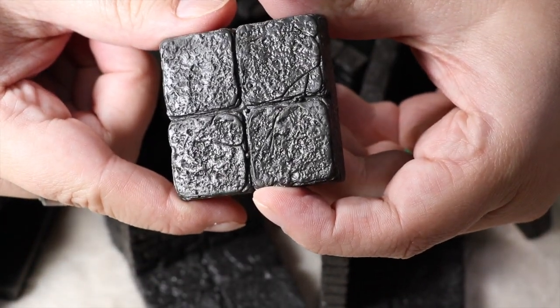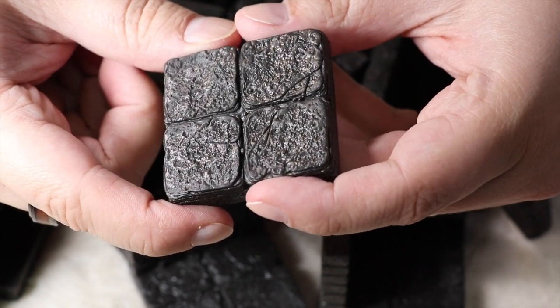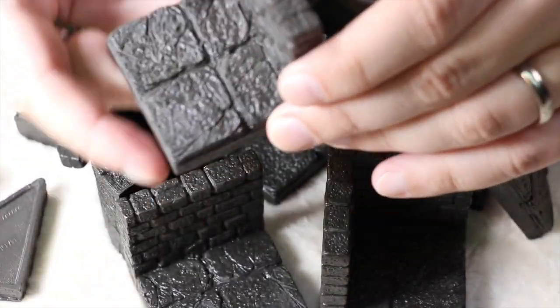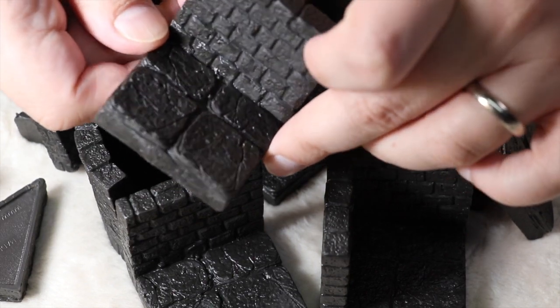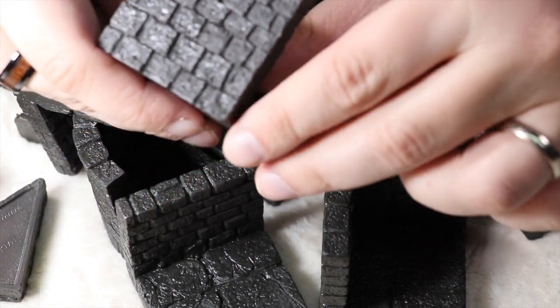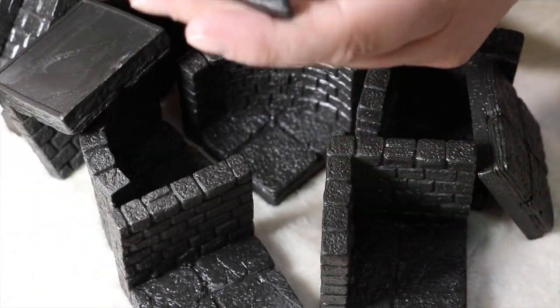You also get these great 2x2 floor pieces which are super easy to paint. We'll cover that in the actual painting video. You get nice standard walls that have one and a half floor pieces going into them. You can see all the beautiful stonework on the back. You can do some nice accent stones there.